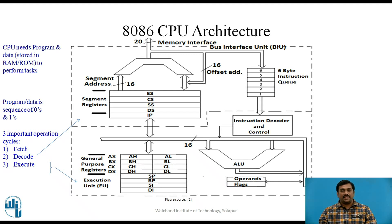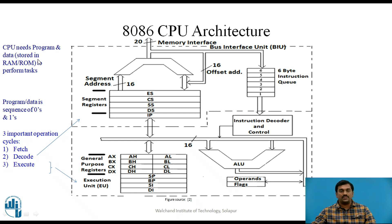Let us see 8086 CPU architecture in detail. As you can see, this architecture is mainly divided into two parts: two functional units namely Bus Interface Unit (BIU) and Execution Unit (EU). Both these units work simultaneously, at the same time. For every task a CPU does, it needs program and data which is stored in random access memory or read only memory.